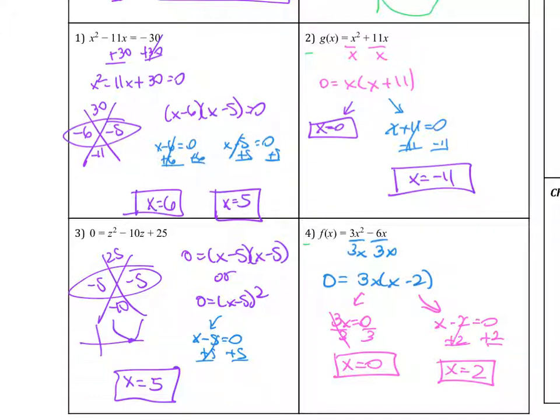For number 4, that's a GCF problem. We can actually divide out a number and a variable, so we divide out 3x. Notice the 3x is in front. We divide it, we're left with an x. And then 6x over 3x is negative 2. Then we use zero product property. Notice that 3x equals zero divided by 3, x will equal zero. Then on the right, x minus 2 equals zero. We add 2 to both sides, so x equals 2.